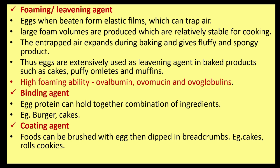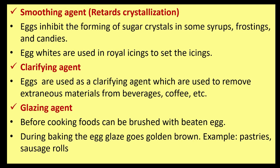Binding agent: egg protein can hold together a combination of ingredients, for example in burgers and cakes. Coating agent: foods can be brushed with egg then dipped in bread crumbs, for example rolled cookies. Smoothing agent: egg retards crystallization and interferes with the forming of sugar crystals in syrups, frostings, and candies; egg whites are used in royal icings. Clarifying agent: eggs are used to remove extraneous materials from beverages such as coffee. Glazing agent: food can be brushed with beaten eggs before cooking, and during baking the egg glaze goes golden brown, for example on pastries and sausage rolls.